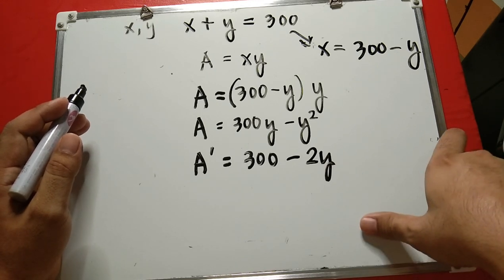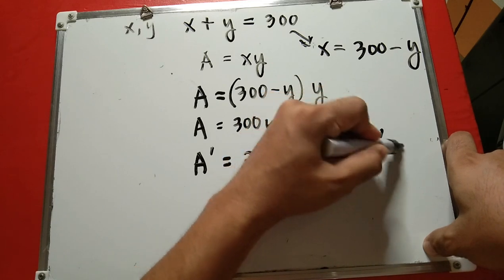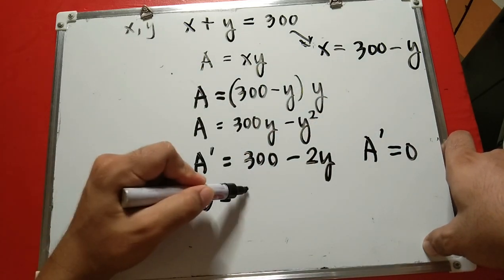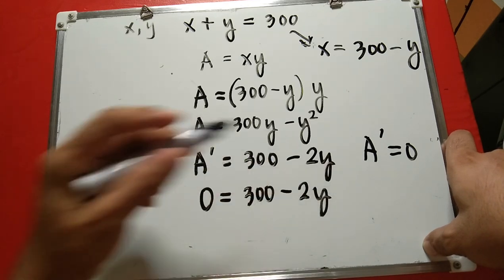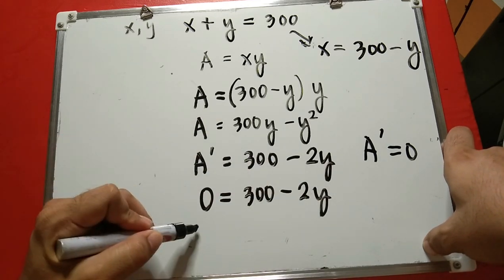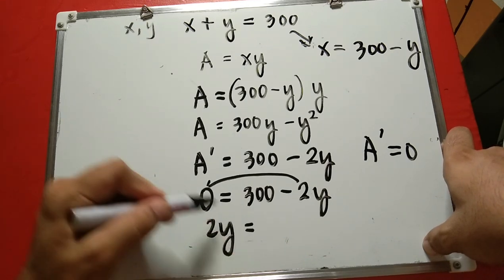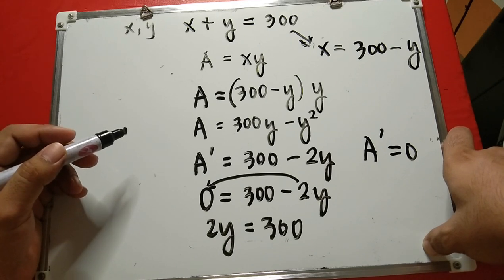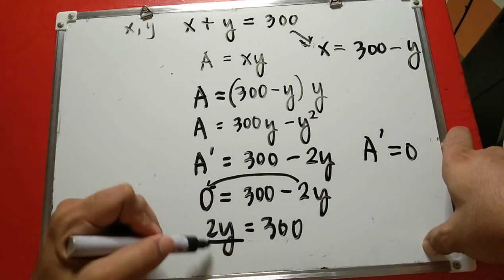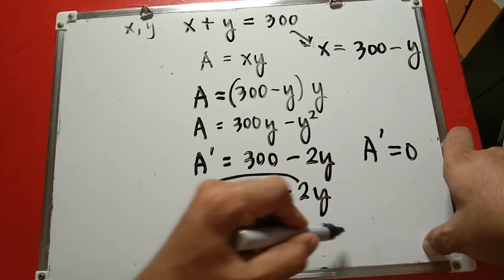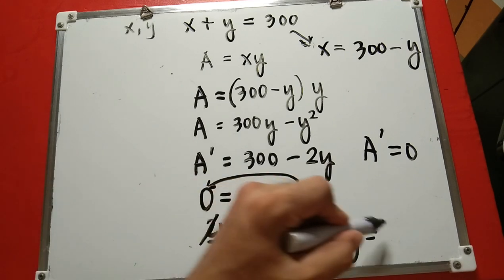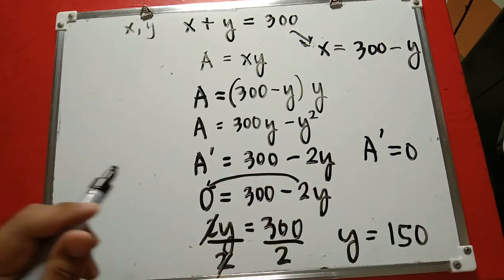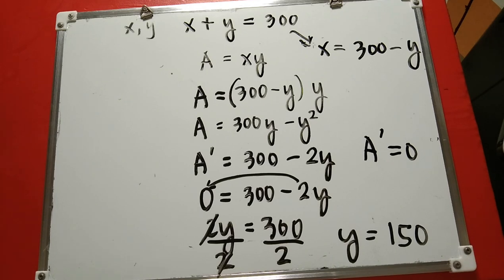To find the maximum value, set A prime equal to zero. So we have 0 equals 300 minus 2y. Solving for y: 2y equals 300, then divide both sides by 2, giving y equals 150. This is one of the positive numbers.